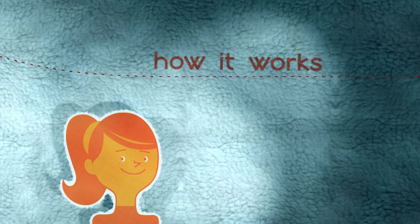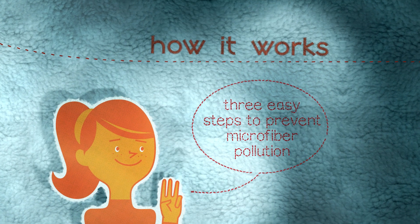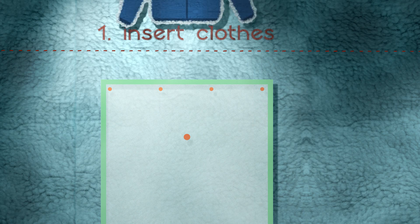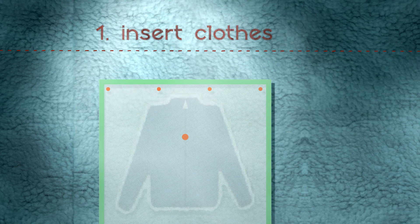How it works. Three easy steps to prevent microfiber pollution. One, put synthetic textiles into the Guppy Friend wash bag.